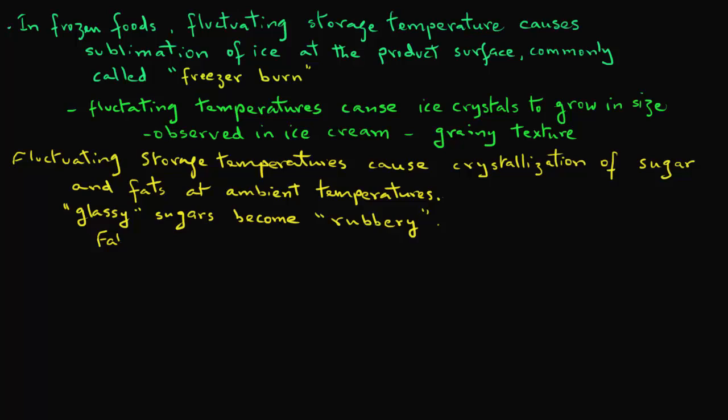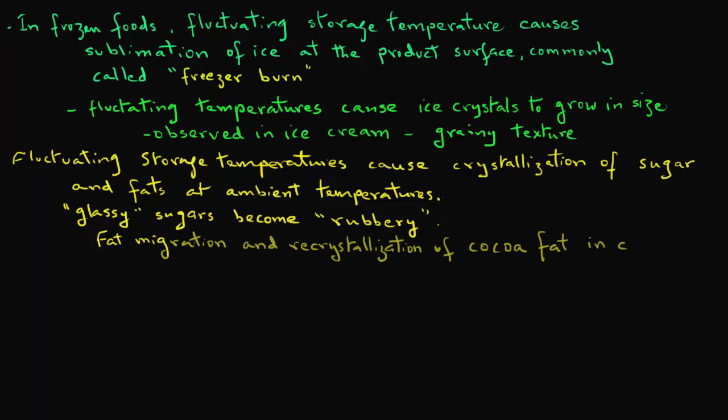Fat migration and recrystallization of cocoa fat in chocolates also cause white discoloration, commonly called fat bloom. Fat crystallinity in chocolate occurs due to fluctuations in temperature. The key takeaway is that fluctuating temperatures during storage can cause quite a bit of damage to selected quality attributes of foods.